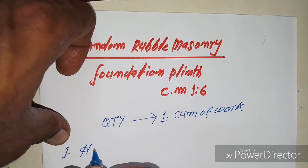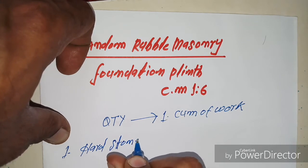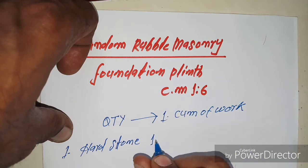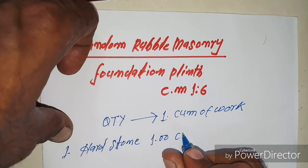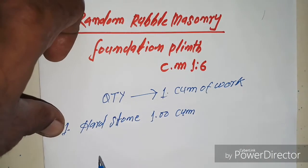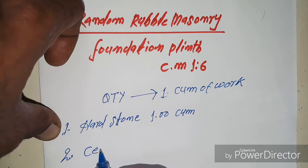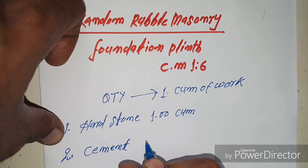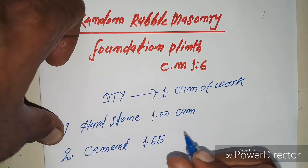पहले नंबर में — Hard Stone: 1.00 cubic meter। Second number में — Cement: 1.65 bags।